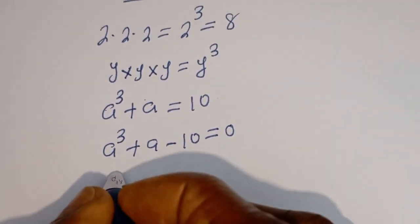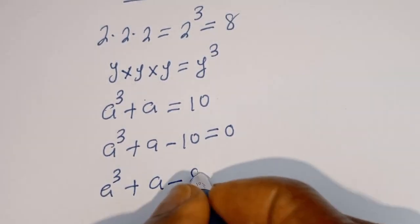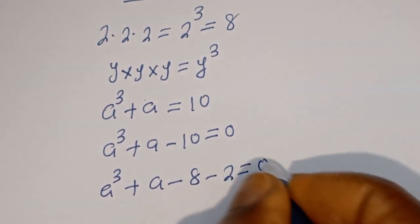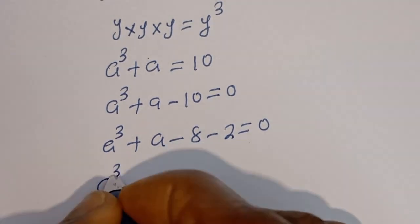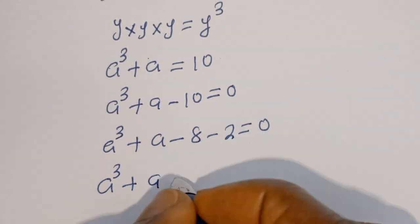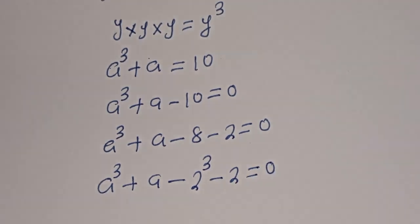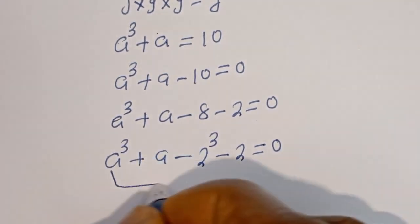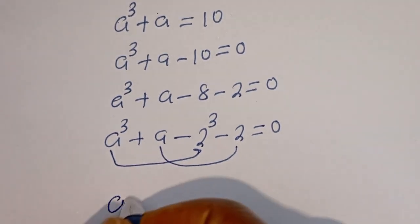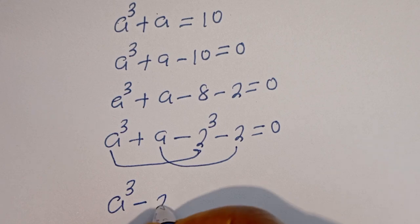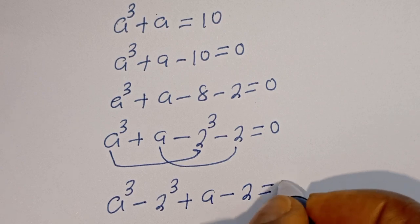Here we have A to the power of 3 plus A minus 10, which can be written as A to the power of 3 minus 8, plus A minus 2, is equal to 0. Note that A to the power of 3 minus 8 can be written as A to the power of 3 minus 2 to the power of 3, and A minus 2 is equal to 0.